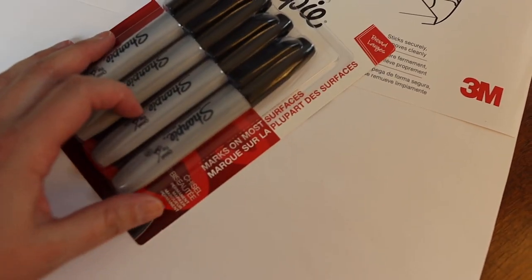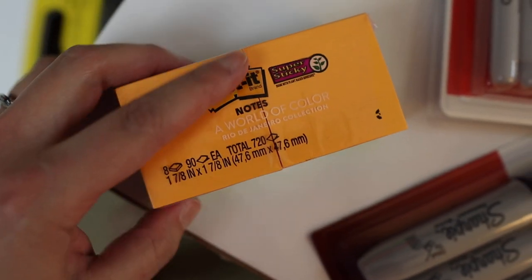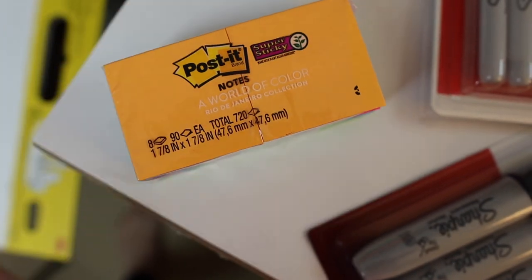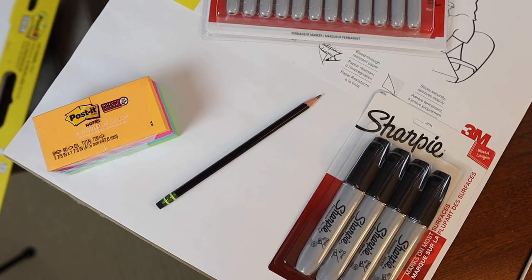A pack of colored Sharpies, the clickable kind. Of course, we're going to need some small Post-it notes to put on our calendar, and we are also going to need a pencil and a ruler for this project as well.